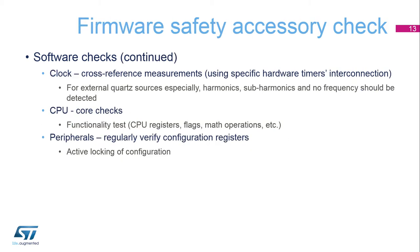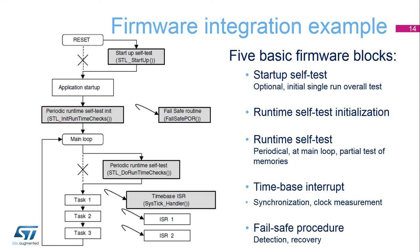Clock cross-reference measurements can use dedicated timer interconnections. The proportional ratio between two independent clock sources has to stay within an expected range. One frequency is used as timer input, while the other gates the timer input and raises timer capture events. A specific set of instructions can verify the CPU unit and its registers. For peripherals, it is suggested to verify the correct configuration at regular intervals. In principle, self-test procedures are included as an additional task when initializing the application main loop during system startup. This runtime self-test task provides periodic testing of the CPU, clock system, stack boundary, program flow, and both volatile and non-volatile memories.